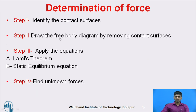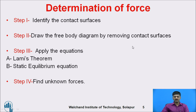A few steps are required to identify unknown forces when a body is in contact with another body. Step one: identify the contact surfaces. Step two: draw the free body diagram by removing the contact surfaces — identify the contact surfaces, remove them, and show the reactions in the opposite direction. Step three: apply the equations — either Lamy's theorem or static equilibrium equations. Last step: find out the unknown forces.